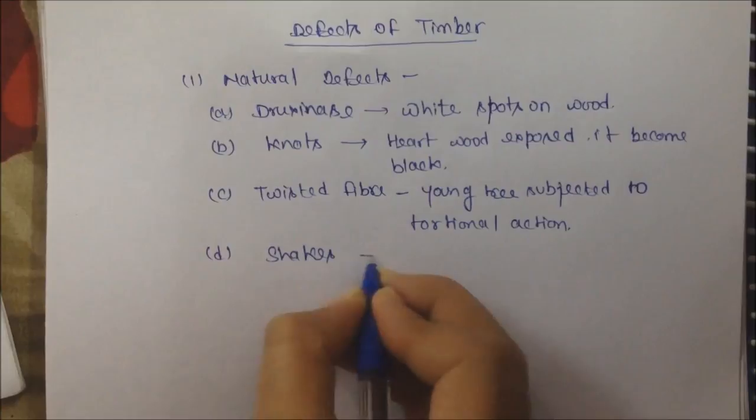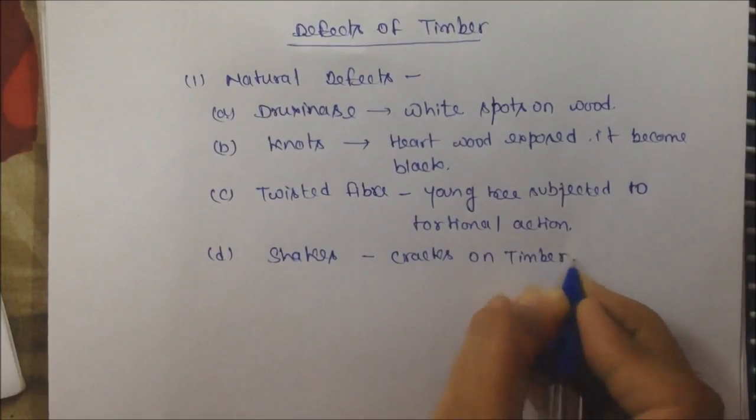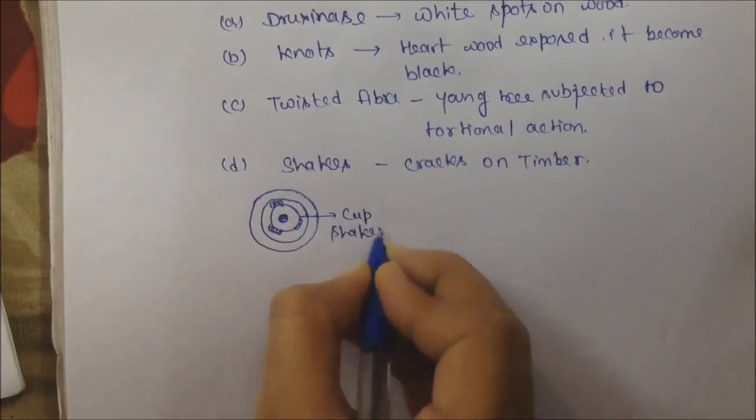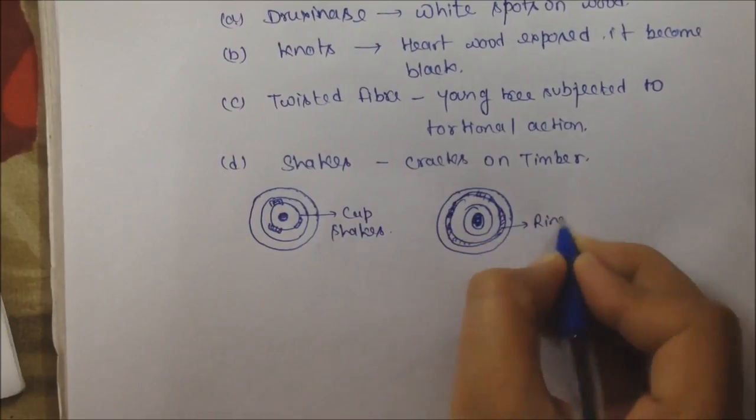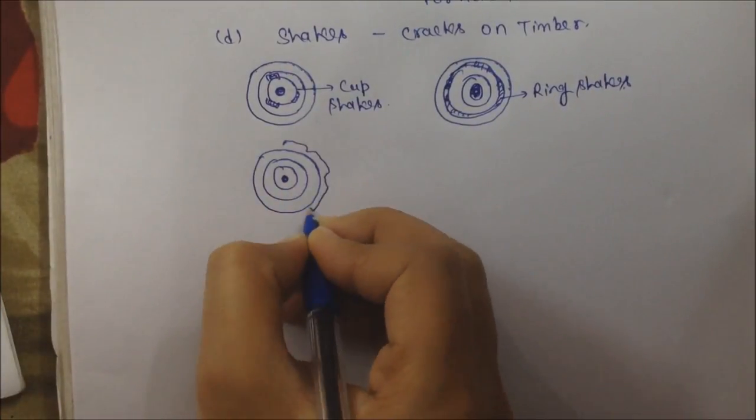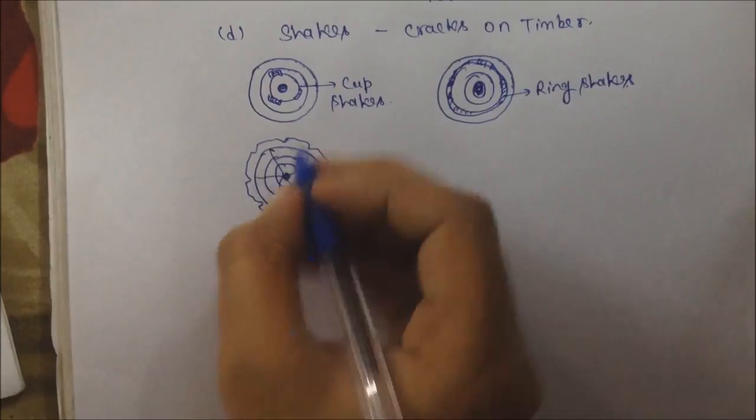Fourth is shakes. Development of cracks on timber is called shakes. These are different types. First is cup shakes, second ring shakes, star shakes, and heart shakes.